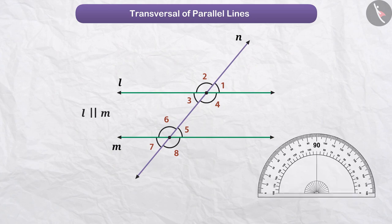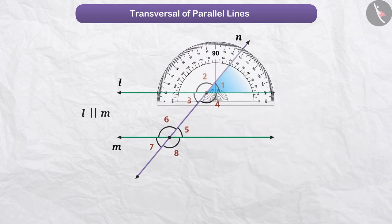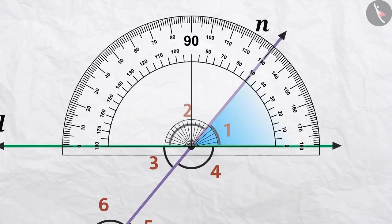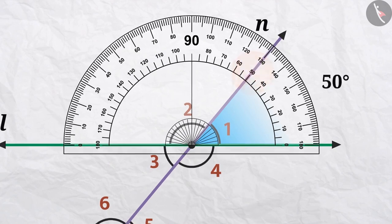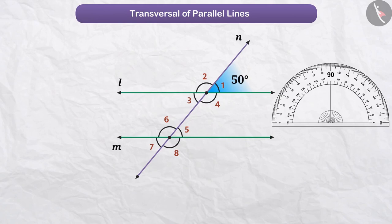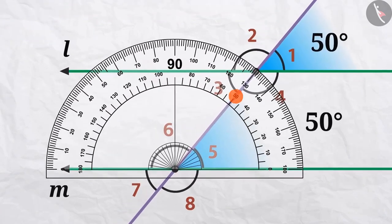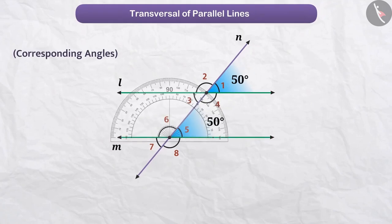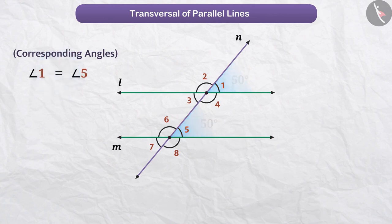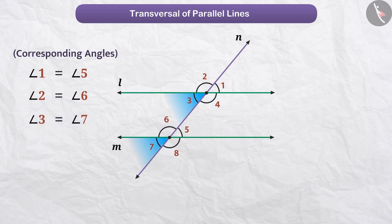Let's find the measure of angle 1 using a protractor. Here we have got a measurement of angle 1 as 50 degrees. With the concept of corresponding angles, we find that angle 5, which corresponds to angle 1, is also 50 degrees. We can say that corresponding angles angle 1 and angle 5 are equal. Similarly, angle 2 and angle 6 are equal, angle 3 and angle 7 are equal, and angle 4 and angle 8 are also equal.